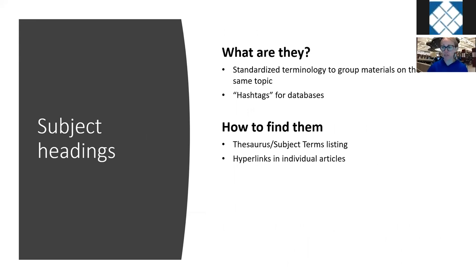Now we have subject headings. Subject headings are a set of standardized terminology assigned to individual materials in databases, used to group materials on the same topic. I often use the analogy that they're like hashtags for databases — just as you use hashtags on social media to find posts on a topic, you can use subject headings to find material on a given topic. There are two main ways to locate subject headings: through the subject terms listing, sometimes called the thesaurus, within a database, and through hyperlinks in individual articles.